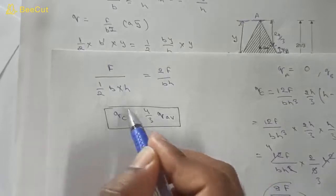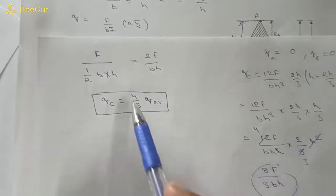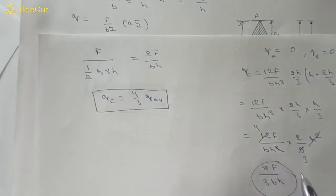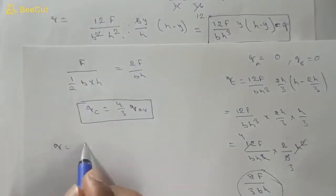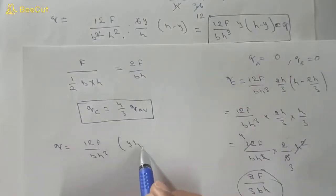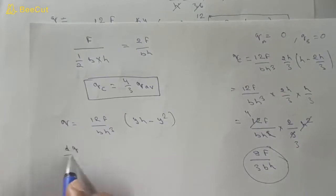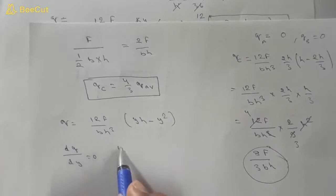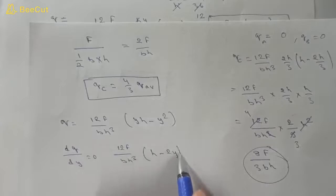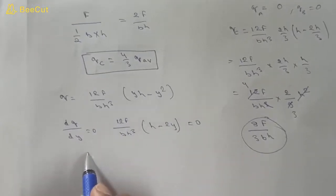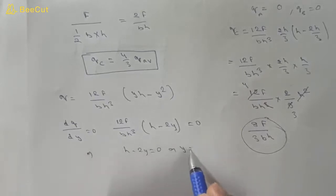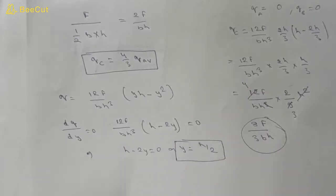To find the maximum shear stress, we use the expanded form: q = 12F/(bh³) * (yh − y²). Maximum occurs where dq/dy = 0. Differentiating: 12F/(bh³) * (h − 2y) = 0, which gives h − 2y = 0, so y = h/2. Maximum shear stress occurs at y = h/2, which is the mid-height of the triangle.